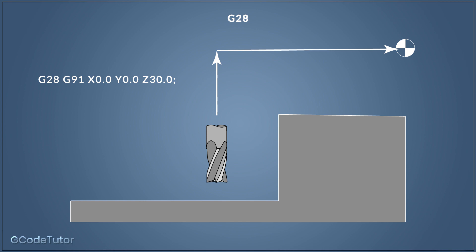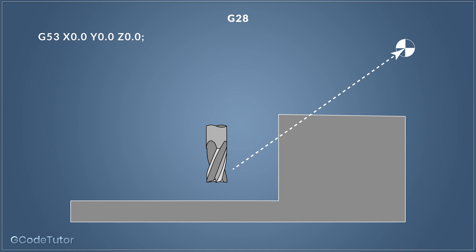To recap: G28 means go back to the machine's zero or reference position via another position that we give it with X, Y, and Z coordinates. So if we give G28 Z30, it would go 30 millimeters up in Z before going back to its reference position. We always need to put the machine into incremental mode first, otherwise it will use the distance from the working datum — our G54 or G55 — and not the machine datum. If we don't have any obstacles in the way, we can safely use G53, which tells the machine to go directly to the machine datum at X0 Y0 Z0.